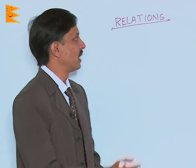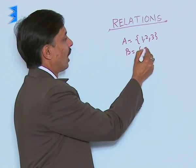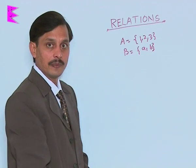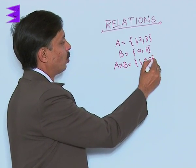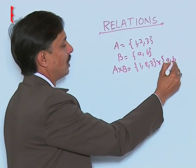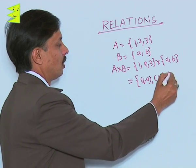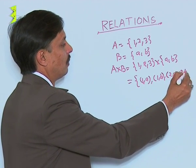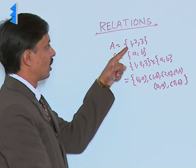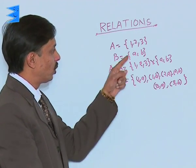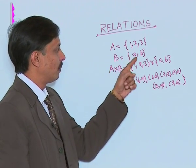If I take one set A having the elements suppose 1 comma 2 comma 3, another set is B having the elements a comma b. So, if I ask you their cross product A cross B, it will be given by {1, 2, 3} cross {a, b}. Then the elements will be of the type (1,a), then (1,b), (2,a), then (2,b), (3,a), and finally (3,b). So, there were three elements in set A and two elements in set B. The cardinal number of set A was 3, cardinal number of set B was 2.